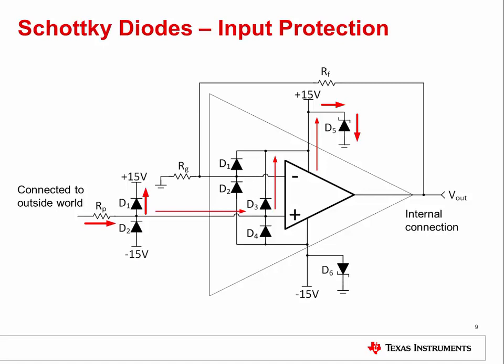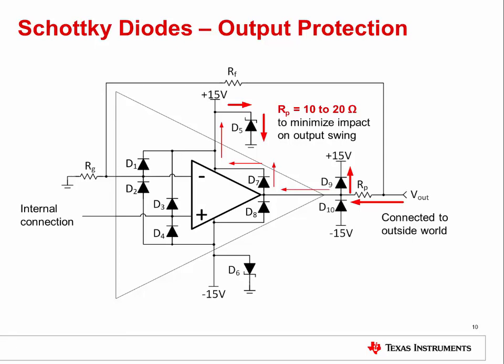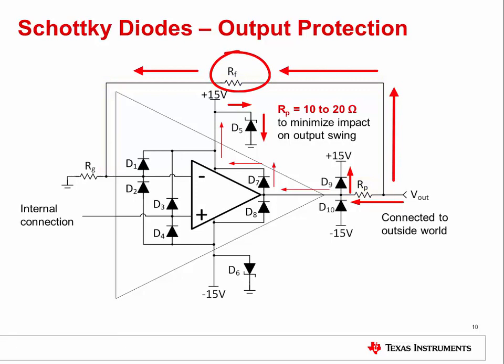Long sensor leads may develop a significant charge that causes an EOS event, and improperly wired external connections and other large induced voltages can also cause EOS damage. The same Schottky protection circuit can also be used on an amplifier's output if the output is connected to the outside world. One key point with output protection is that a large series resistance RP will significantly limit the op amp's output swing — higher power amplifiers will require lower values of RP, with values of 10 to 20 ohms being common. Notice that RP is inside the feedback loop, which allows an accurate output voltage to be maintained despite the voltage dropped across RP. Very low current will flow through RF to the input of the circuit, as RF is generally much larger than RP.